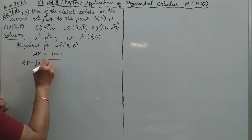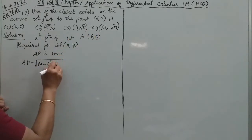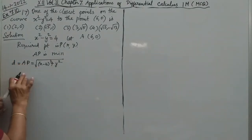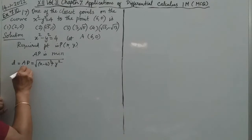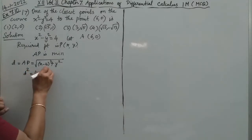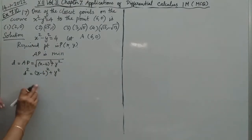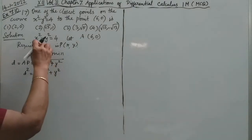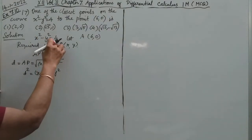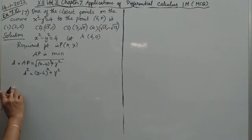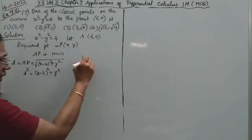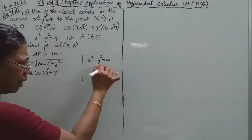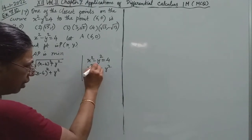So AP squared equals (x minus 6) squared plus y squared. If we call this distance capital D, then D squared equals (x minus 6) squared plus y squared. Now since x squared minus y squared equals 4, we get y squared equals x squared minus 4. Substituting, D squared equals (x minus 6) squared plus x squared minus 4.